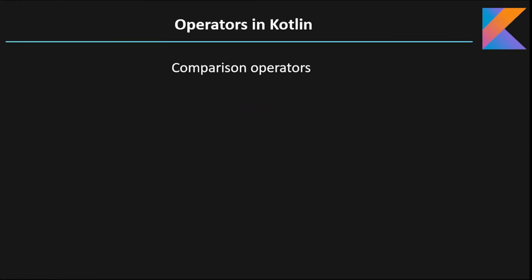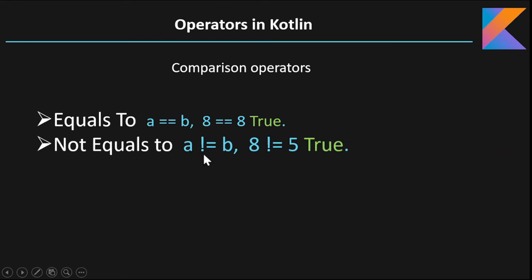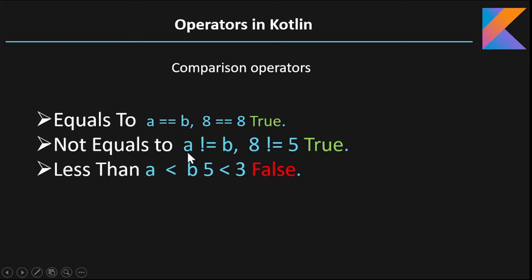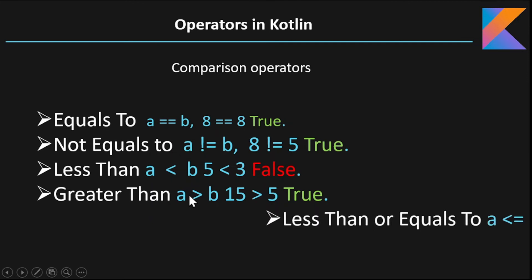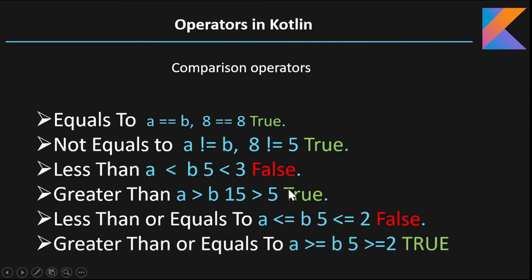The next type of operator is the comparison operator. The first one is the equals-to operator, which checks whether both operands A and B are equal or not. The second is the not-equals-to operator, indicated by the exclamation mark and equals sign, which checks if they are not equal — it returns true if the two operands are not equal. The third is the less-than operator. The fourth is the greater-than operator. The fifth is less-than-or-equals-to, which returns true if operand A is less than or equal to operand B. The final comparison operator is greater-than-or-equals-to, which returns true if operand A is greater than or equal to operand B, otherwise it returns false.